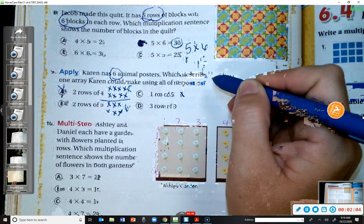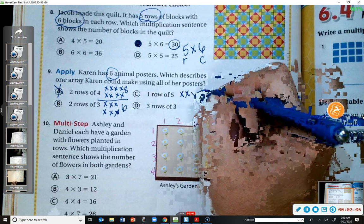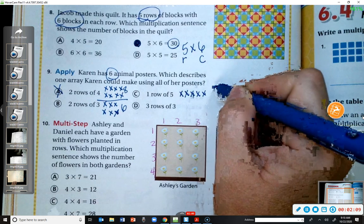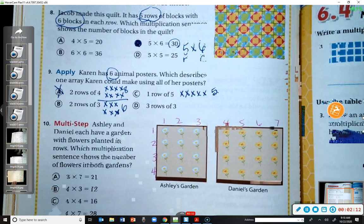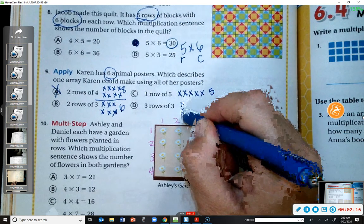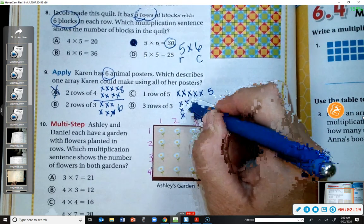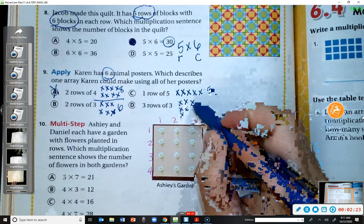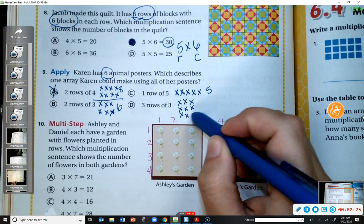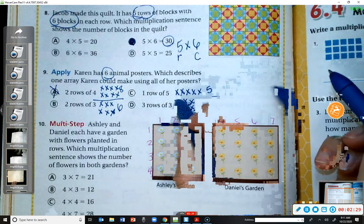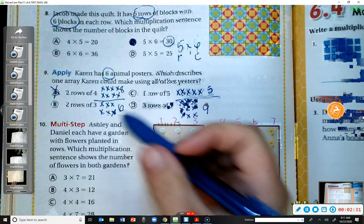One row of five. So that's one row. And I need five in it. So one, two, three, four, five. That just equals five. Okay. Three rows of three. So one, two, three. And then I make sure I have three in it. So one, two, three, four, five, six, seven, eight, nine. So that's not correct either. So the only one that equaled six was B.